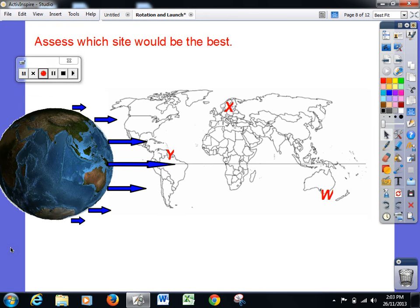So after watching that, we have to assess which site would be the best. And here we've got French Guyana at Y, a position in Australia's centre at W, and also a place in northern Europe, there at X.